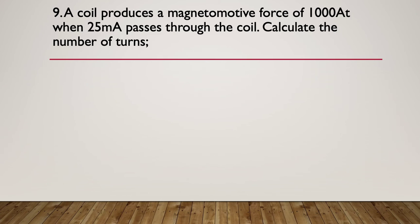Question nine. A coil produces a magnetomotive force of a thousand amp turns when 25 milliamps passes through the coil. Calculate the number of turns. A bit of a calculation here for you. Pause here. Here's the hint. The formula is in the units. It's in amp turns, and you know how many amps there are. Can you use the amp turns to work out the number of turns?